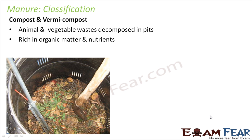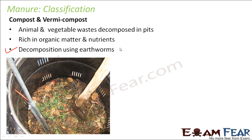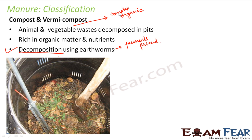The decomposition is done using earthworms, and that is why earthworms are called the farmer's friend because they help in the decomposition process. Earthworms, along with decomposers like bacteria and fungi, break down complex organic matter — from animal and vegetable wastes — into simple inorganic substances. These simple inorganic substances act as nutrients for the plants, and their presence increases the quality of the soil.